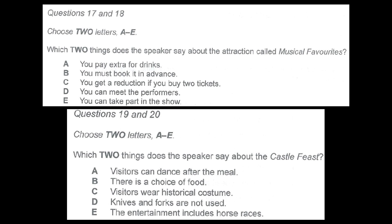Now listen and answer questions 17 to 20. There's plenty to do in the daytime, but what about nightlife? Well, the number one attraction is called Musical Favorites. Guests enjoy a three-course meal and unlimited free drinks and watch a fantastic show starting with a musical set in Paris, then crossing the Atlantic to Las Vegas, and finally Copacabana. At the end, the cast members come down from the stage still in their stunning costumes and you'll have a chance to chat with them.